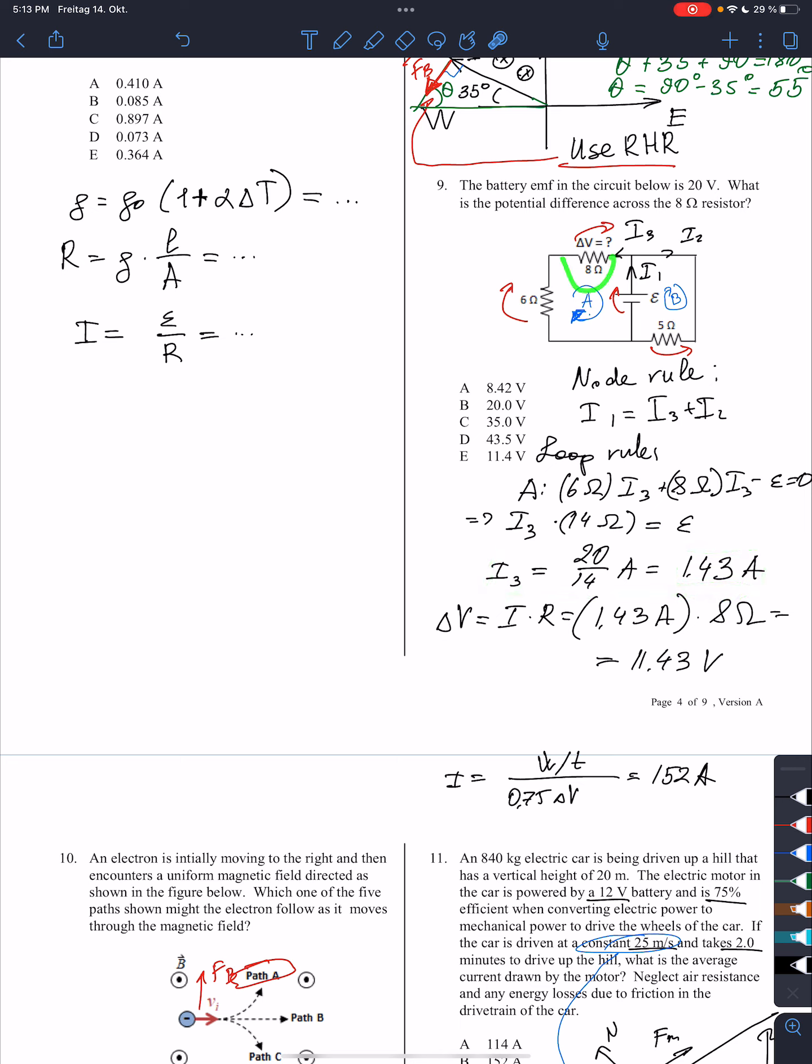But now the potential difference across this resistor, well, we know how to find this. Using Ohm's law, it's the current. Well, actually, this is the current I3, right? It's this current. It's the current times the resistance. The resistance we know, it's 8 ohms. The current we found is 1.43. And this will be the final answer.